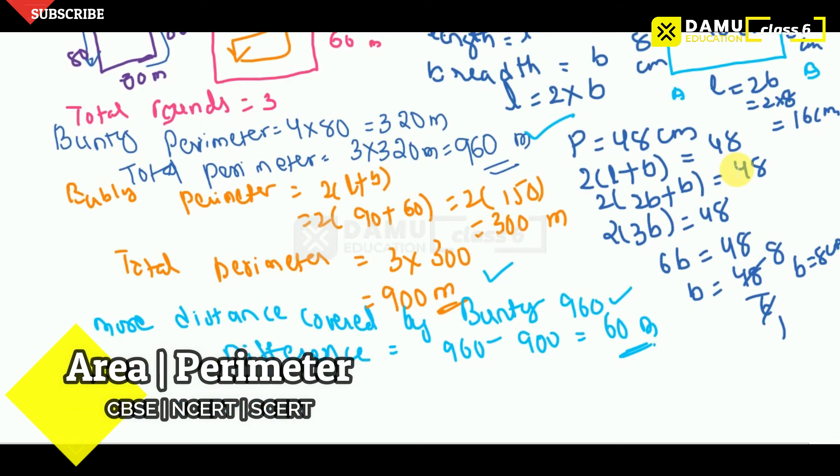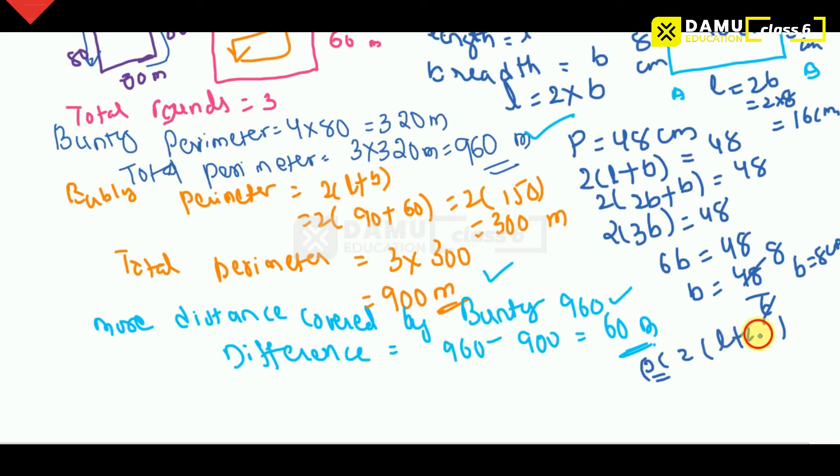So what we can do here is for checking, the perimeter will be equal to 2 into L plus B. That is 2 into L is what? 16. B is what? 8. So 2 into what you will get here? 16 plus 20, 4, 8, 48. We are getting, yes.